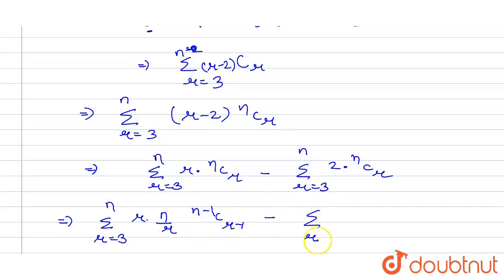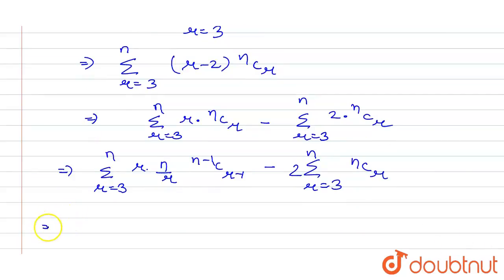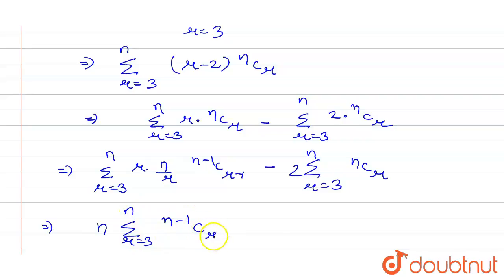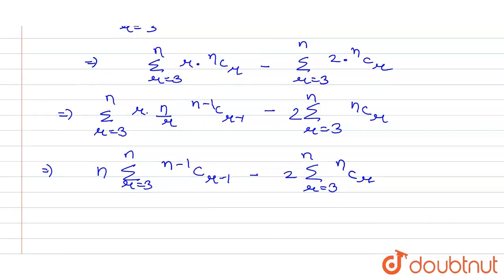Simplifying further: taking n outside gives n times summation r=3 to n of (n-1)C(r-1), minus 2 times summation r=3 to n of nCr.